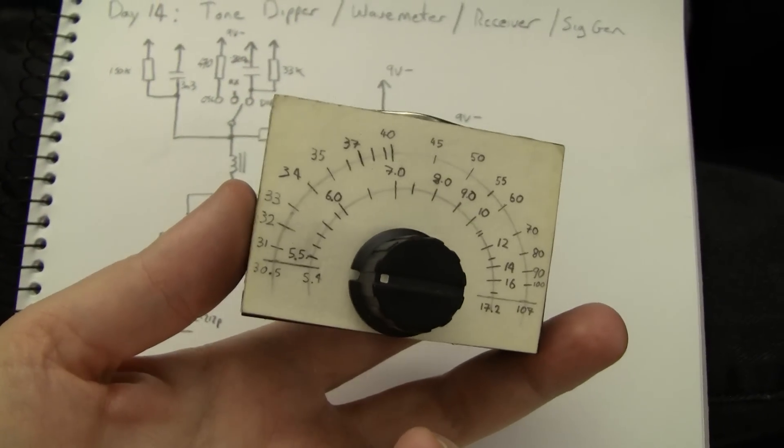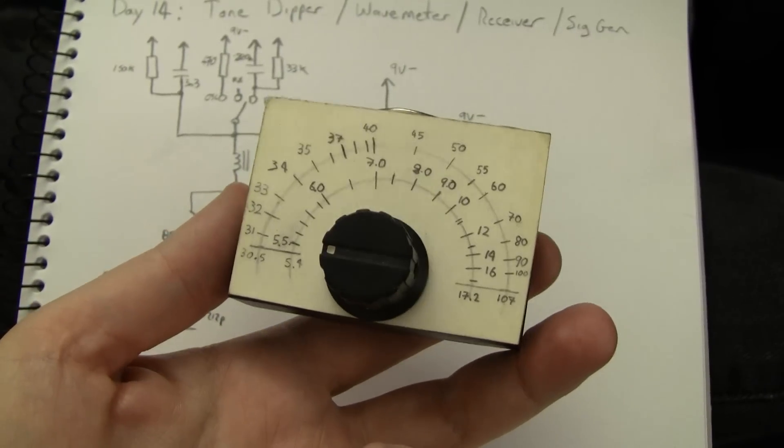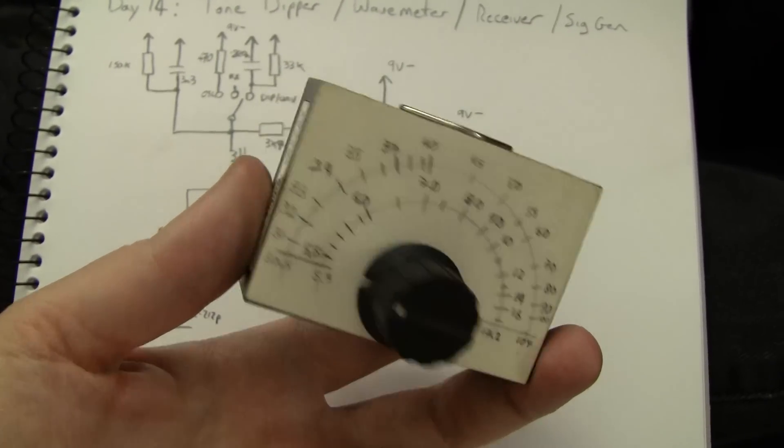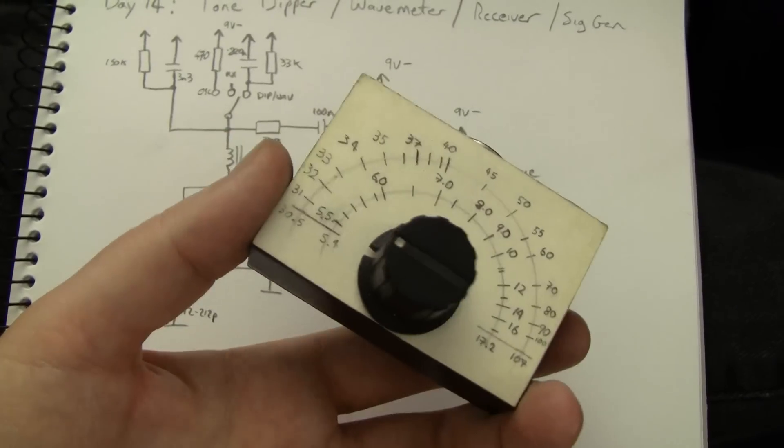As you can see, it only tunes from 5 megs to 17 megs, and then 30 megs to 107 megs, because I never really made extra coils for it.